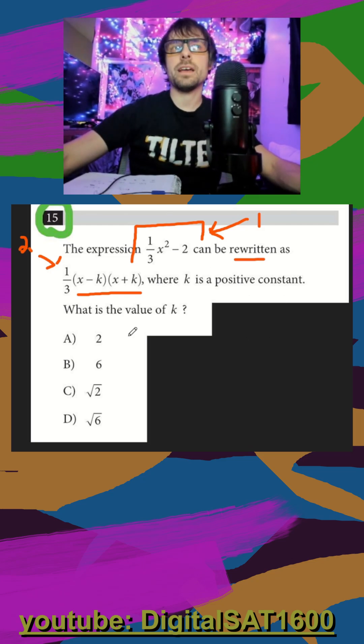But by hand, it's really not that bad because they already gave us a big clue. We divide out the one third, and then it looks like it's going to be a sum and difference or a difference of squares.